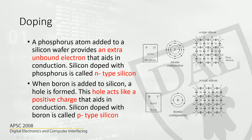Now let's dope the silicon with boron. Because boron is a trivalent atom, the three valence electrons make bonds with the silicon atoms. Where we don't have an electron, we call it a hole — a hole is a lack of electron. At that point it becomes a positive charge, so we call it a p-type semiconductor.